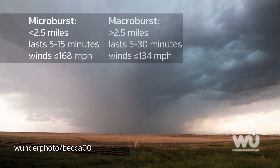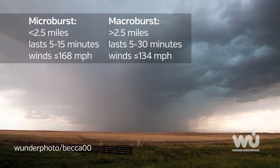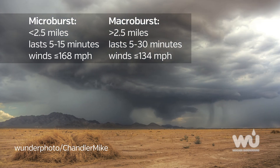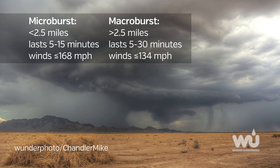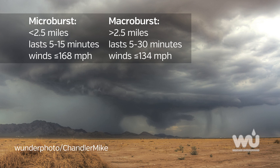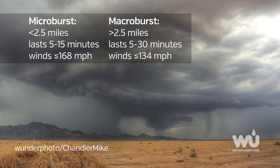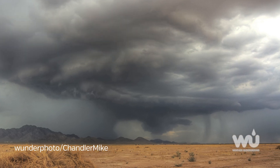Alternatively, a macroburst is a very large downburst with winds extending greater than two and a half miles, lasting five to 30 minutes, and reaching up to 134 miles per hour.